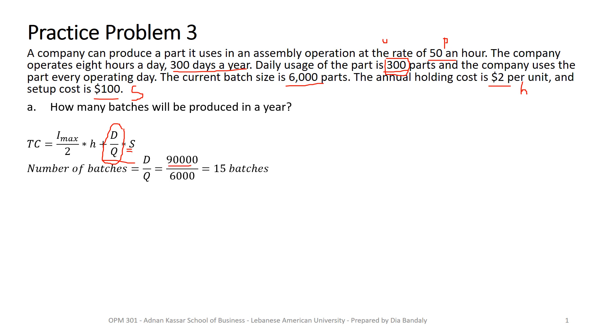So this is how we got this capital D, divided by Q, which is given. So it's 15 batches. Part B. While production is occurring, how many parts per day are being added to inventory?